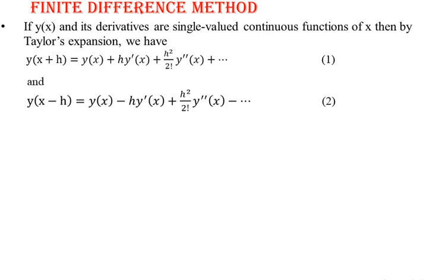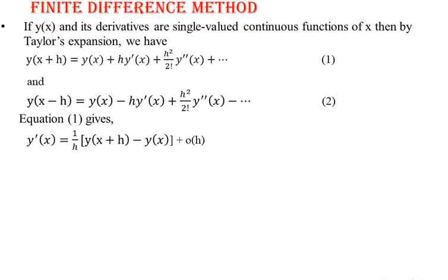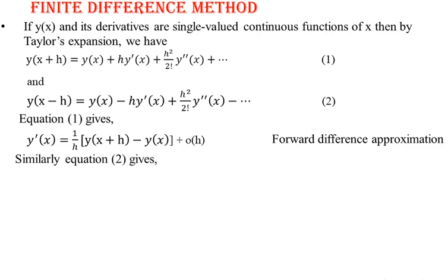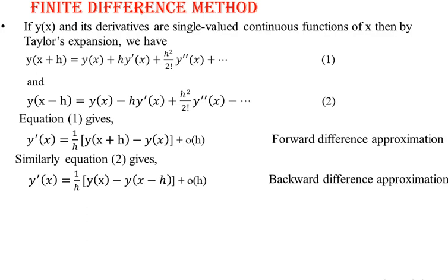Using these two expressions we can write the first derivative y'(x). Rearranging equation 1, we get y'(x) = (1/h)[y(x+h) − y(x)] plus higher-order terms. This is called the forward difference approximation, as it is the difference between the next value and the current value. From equation 2, y'(x) = (1/h)[y(x) − y(x−h)] plus higher-order terms, called the backward difference approximation.